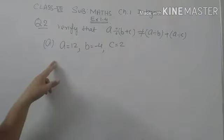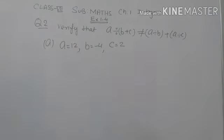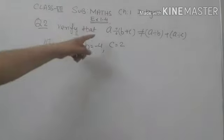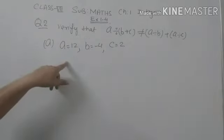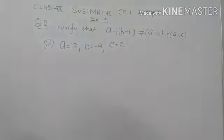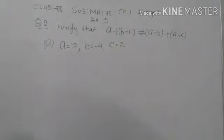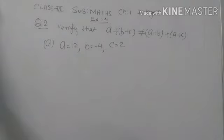This is the first part; there is another part also. So first we solve this part. We have to verify this statement for these values. There are two sides: first is LHS, left hand side, and the other is right hand side, RHS.